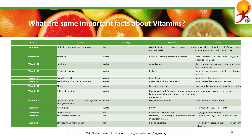Vitamin D is cholecalciferol and it is soluble in fat. Its deficiency can cause rickets and osteomalacia. It is found in fish, eggs, liver, and mushrooms. Finally, vitamin K — its vitamins are phylloquinone and menaquinones. It is soluble in fat. A deficiency can cause bleeding diathesis and it can be found in leafy green vegetables such as spinach, egg yolks, and liver.